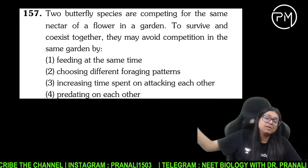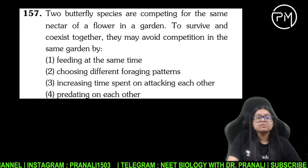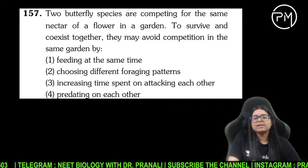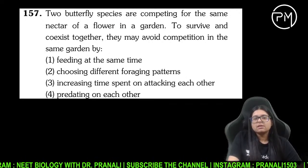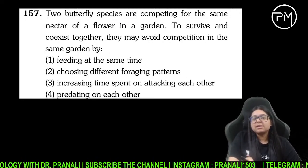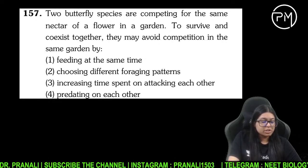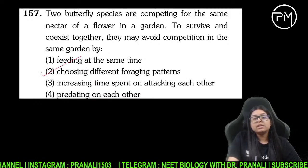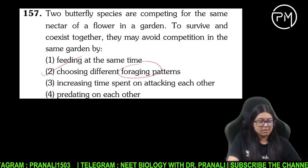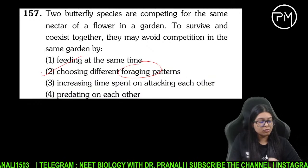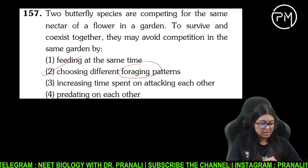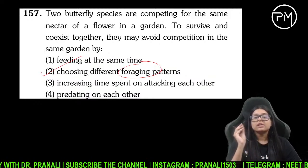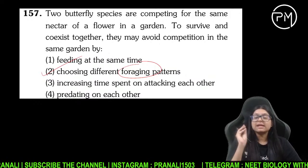Do butterflies competition kar rahi hain, unhe ek flower ka hi nectar chahiye garden mein. Ab yeh dono saath mein reh payein aur competition avoid kar payein, toh inhe kya karna padega — different foraging patterns choose karne padenge. Dono ek hi khayenge toh dono ko nahi milega — negative relationship hoga. They will have to choose different foraging patterns.